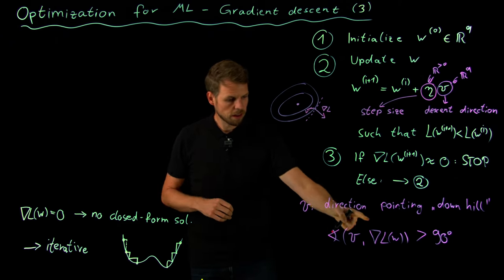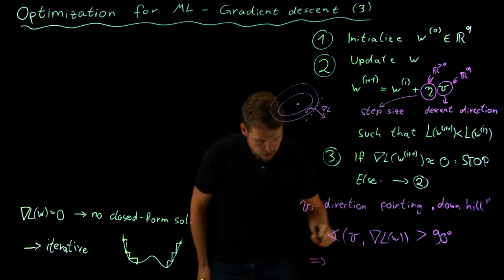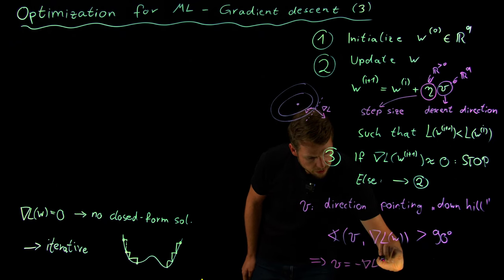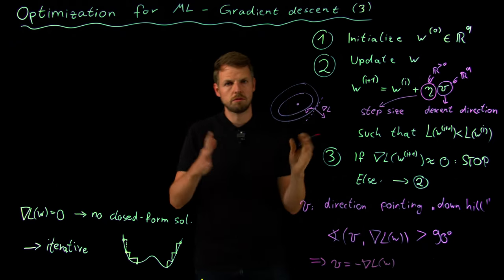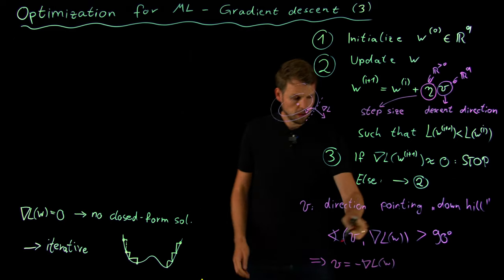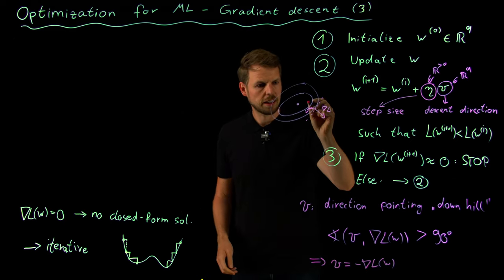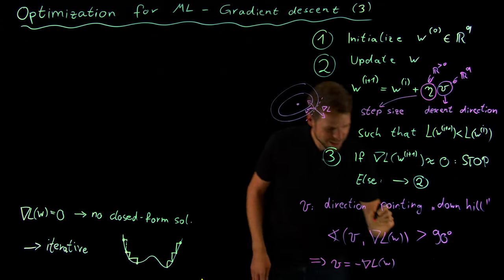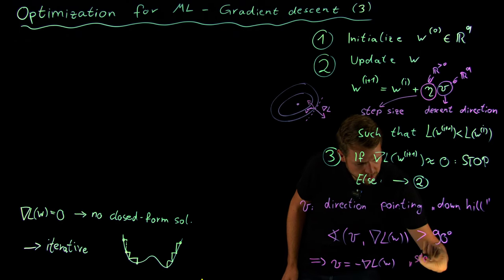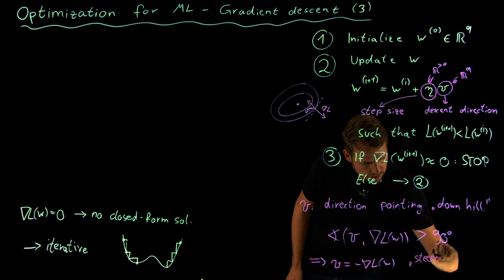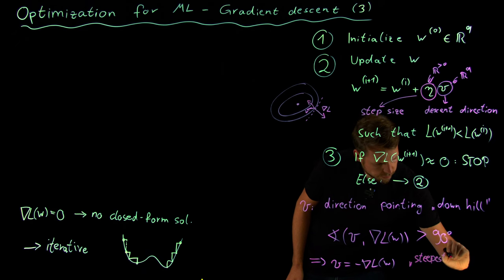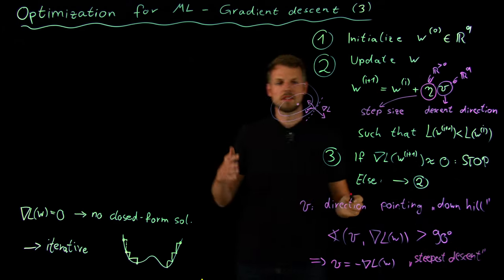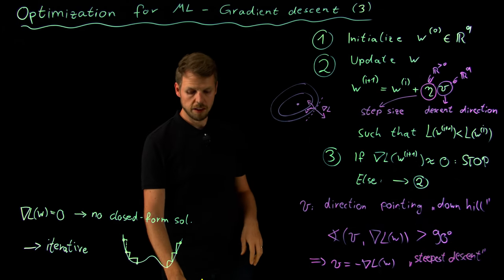Since the gradient points in the steepest ascent direction, an easy choice is to set v to be the negative of the gradient. This means going exactly in the opposite direction — not curved, just straight opposite — and this is called the steepest descent direction.